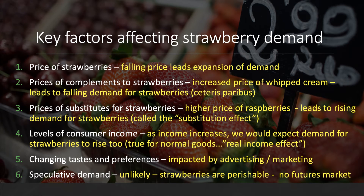In some markets — though not necessarily with strawberries — there is actually a speculative demand for certain commodities: people buying in the expectation that the price will go up in the future. With strawberries it's probably unlikely, as strawberries are perishable and there's no real futures market for them. But these factors — price of the product itself, price of complements and substitutes, people's incomes, tastes and preferences, and speculative demand — can be applied to any industry or market. That covers the demand side.